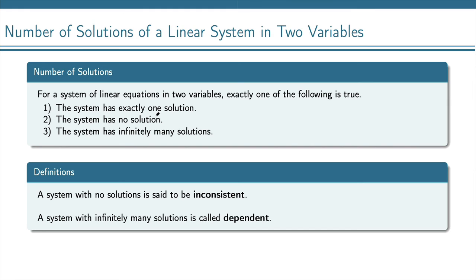When a system of equations has no solution, we have a special word for that. We call that system inconsistent. And the third case where the system has infinitely many solutions, we call that system dependent.